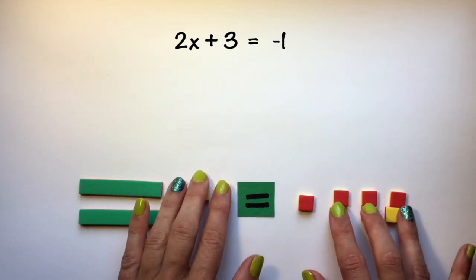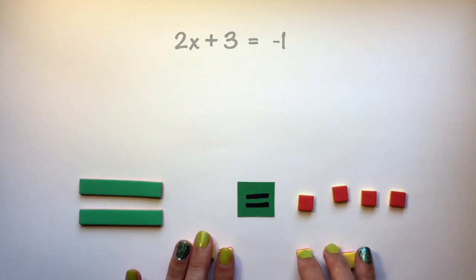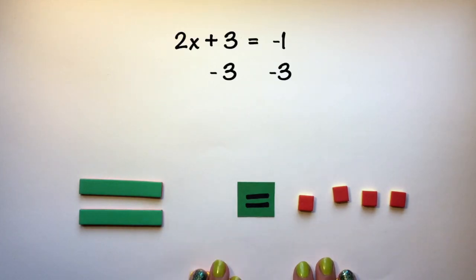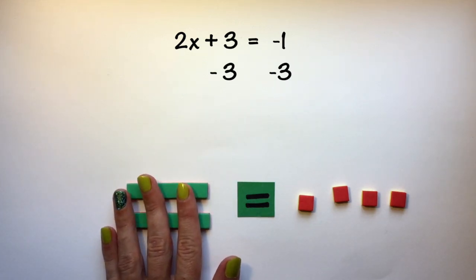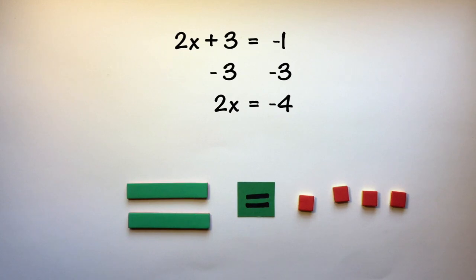I now have enough zero pairs that I'm able to take away 3 from both sides, still keeping my equation balanced. And I can see that 2x is equal to negative 4.